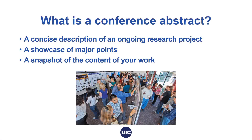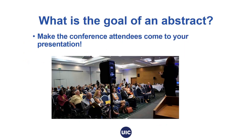What is a conference abstract? A conference abstract is a concise description of an ongoing research project, a showcase of major points, and a snapshot of the content of your work. It should give the reader a clear idea of your research project and its contributions to the field. The goal of a conference abstract is to make conference attendees come to your presentation. You want to attract fellow researchers whose own research may be in conversation with your project, as well as other conference attendees from other disciplines and fields who find your project compelling.